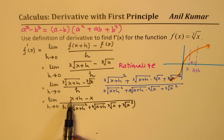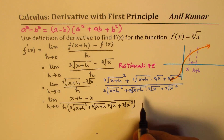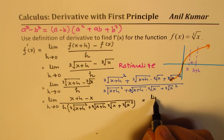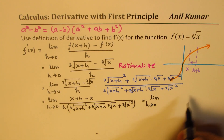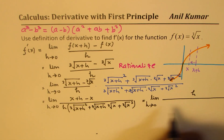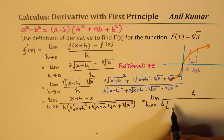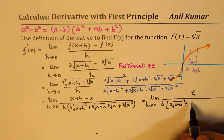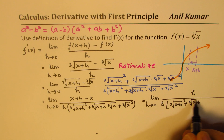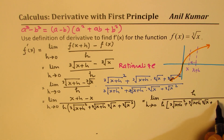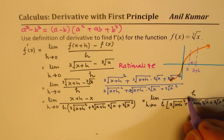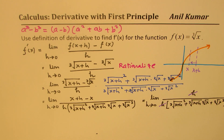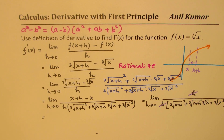In the numerator, x minus x is 0, so you get only the term h. We get: limit as h approaches 0 of h over h times [(∛(x+h))² + ∛(x+h)·∛x + (∛x)²]. Now you can cancel h and substitute h equals 0 to get your derivative expression.